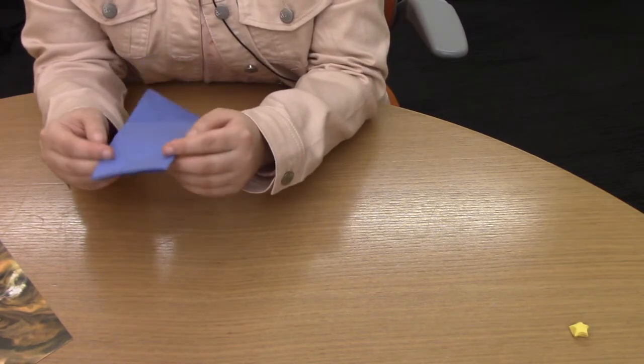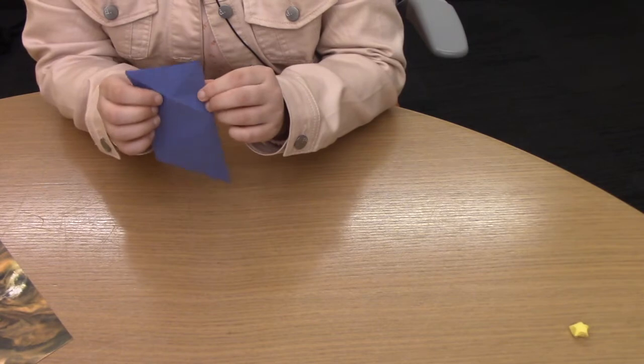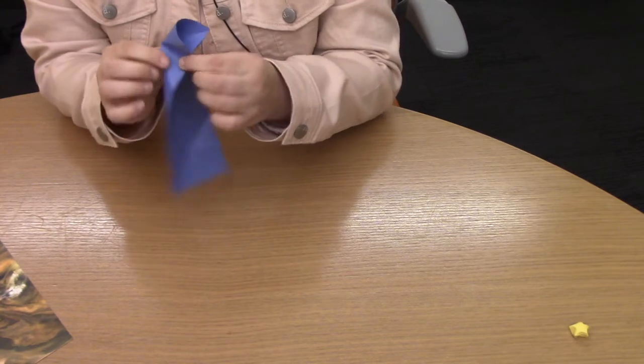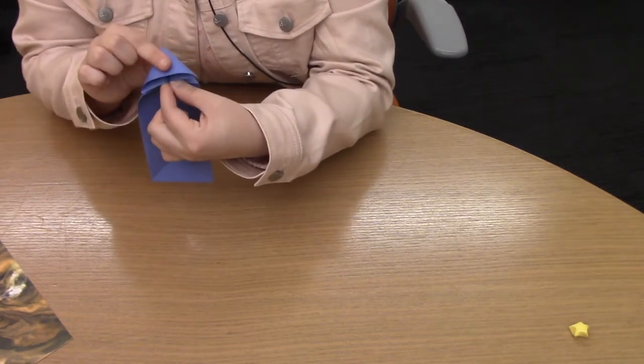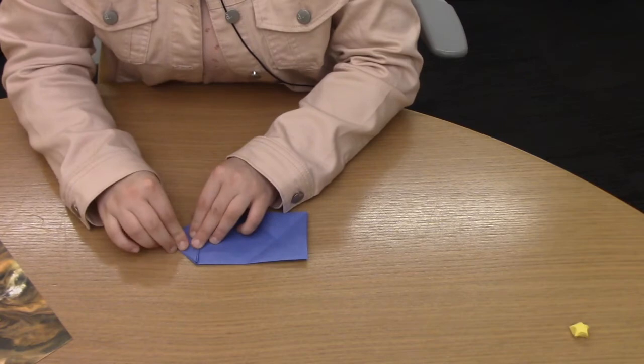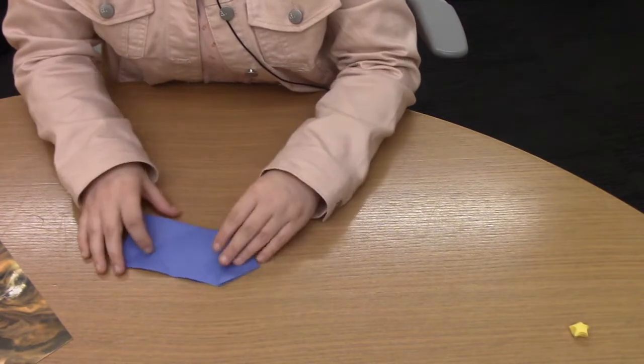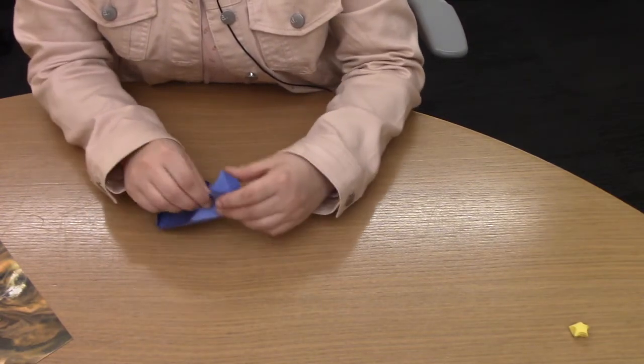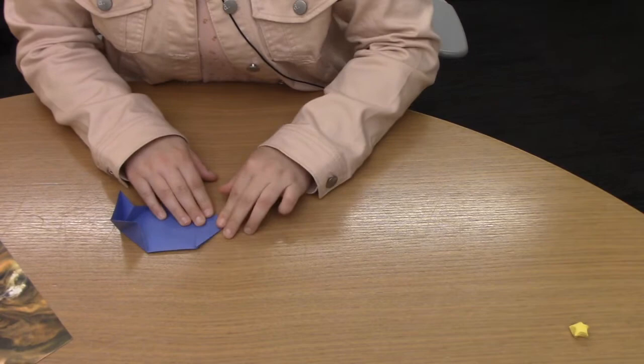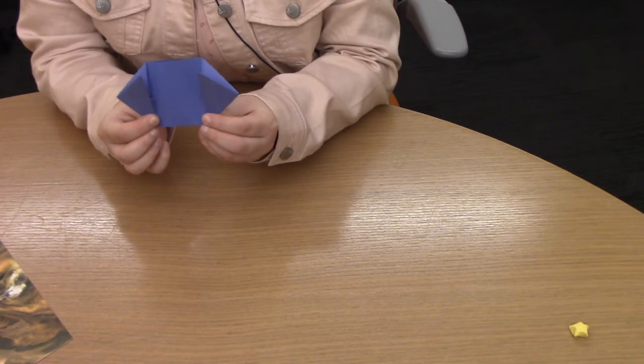And what you're going to do is you're going to grab your paper like this, and these creases will be up at the top. You want to bring the middle parts in. So it'll look like that in the back and then flatten it down. You want to do that on both ends. So now you should have a square with these two triangles on each end.